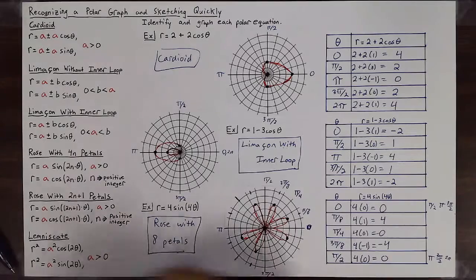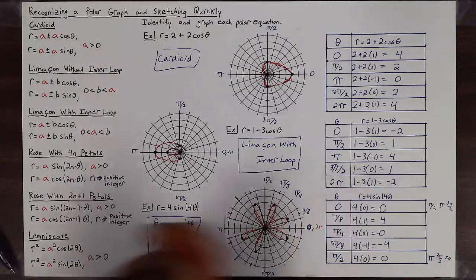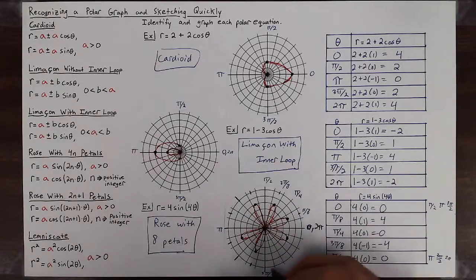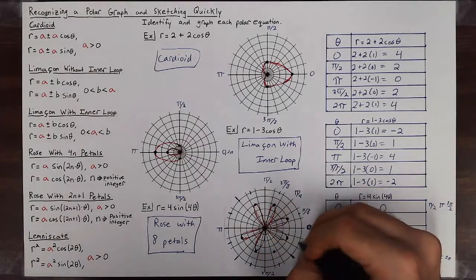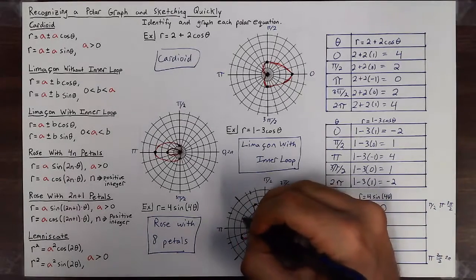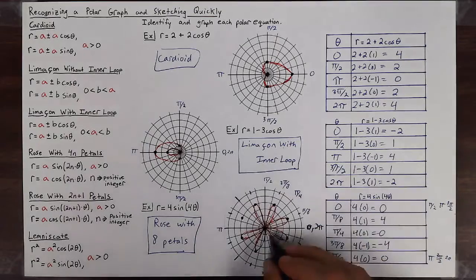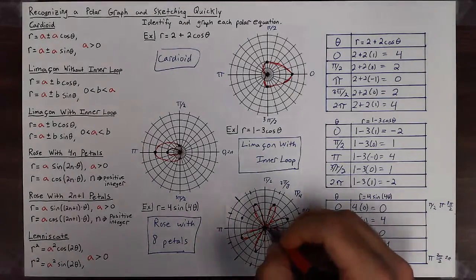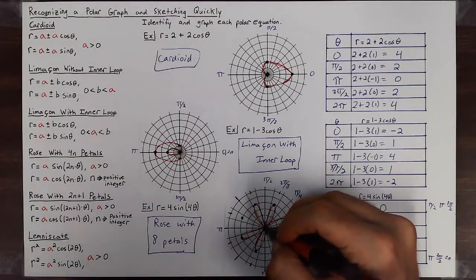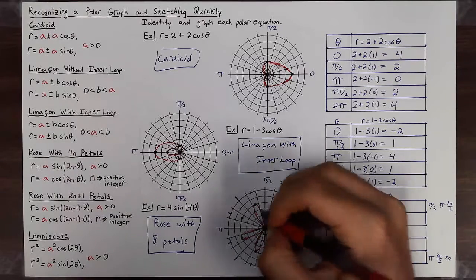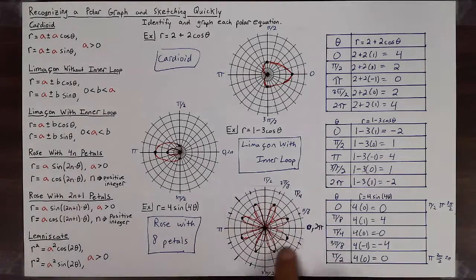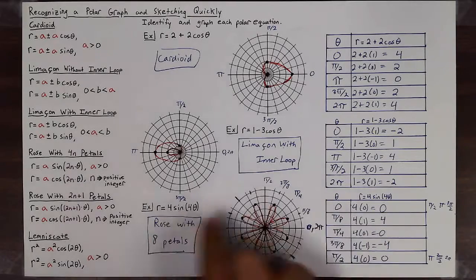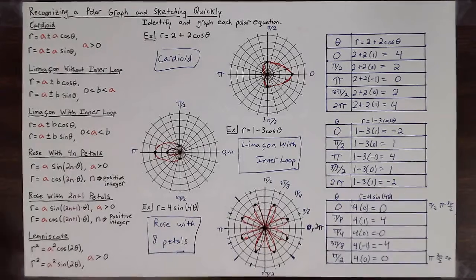One final cycle from 3π/2 to 2π. At 3π/2 the value is zero, the next tick mark is at positive four, then zero, then negative four, then back to zero to finish the full cycle. It goes out to zero, back in, out again, back in — and there's our rose with eight petals. Each petal reaches out to four. That is how you recognize a polar graph and sketch it quickly.